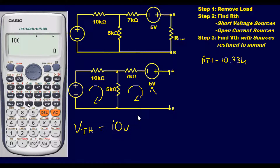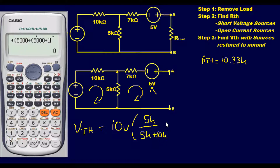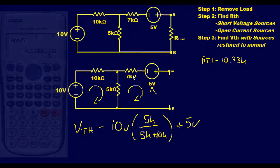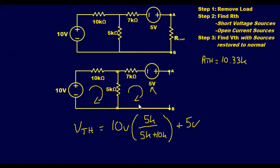Using the voltage divider rule: 5k over (5k plus 10k), then we add the 5 volt power supply. When you did the R_thevenin you already accounted for the 7k ohm resistor, but since there's no current flowing through it you don't have to worry about it when finding V_thevenin. You can effectively treat that resistor as if it's not even there — if there's no current flowing through it, it's not applicable.